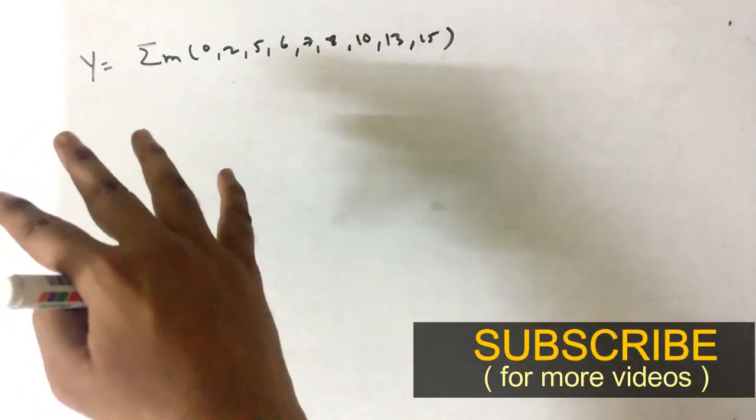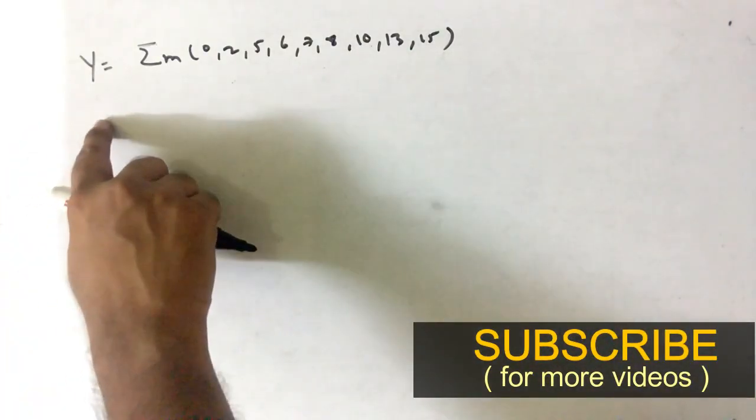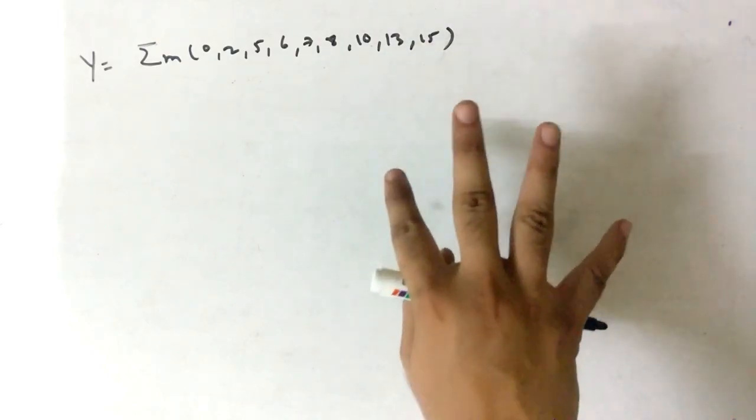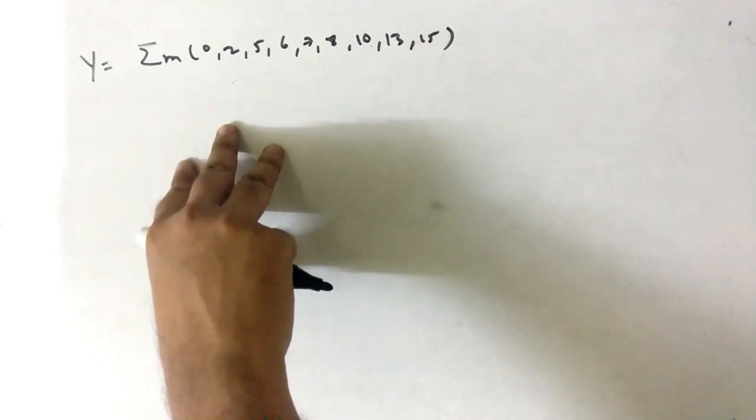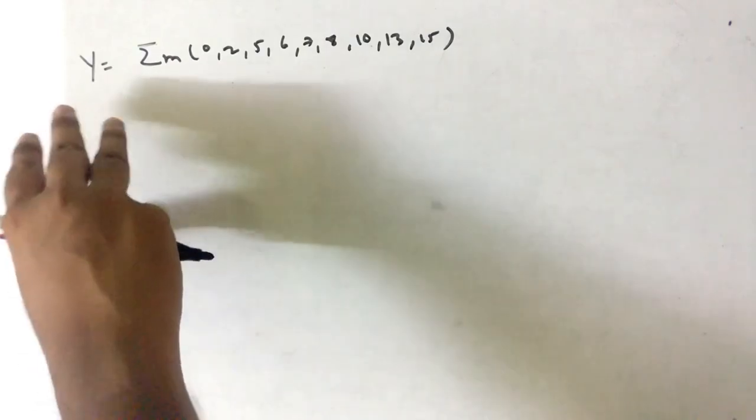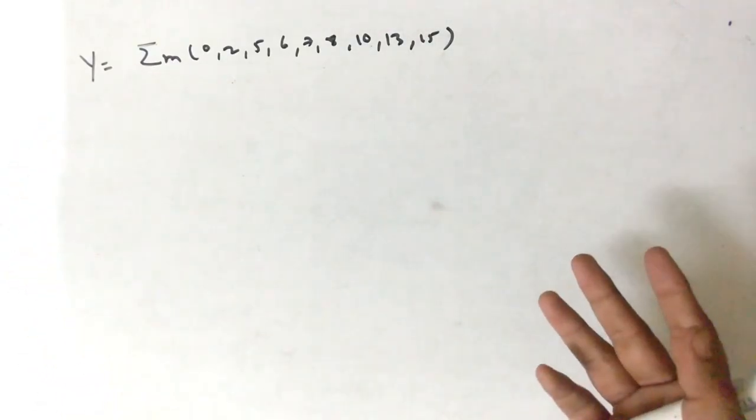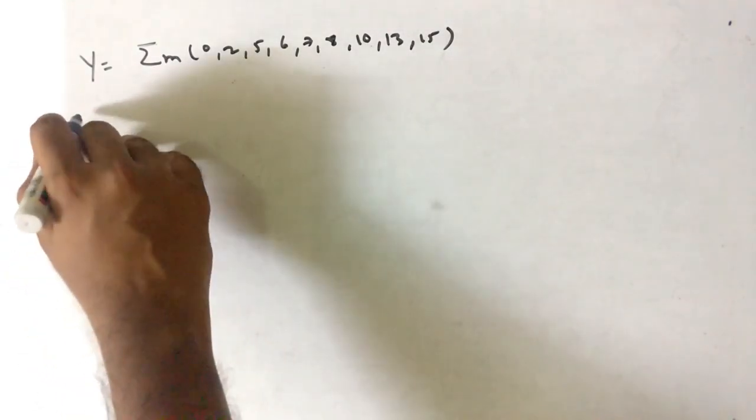Hello friends, in this video we will solve the K-map problem. The first problem we have is y equals the summation of these min terms. First you have to derive the equation of the output, then you have to implement that using the basic gates.